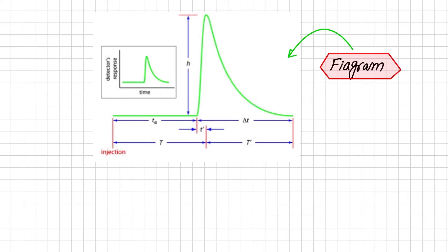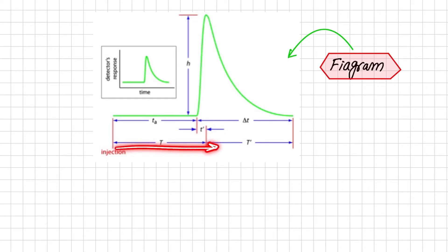There are several parameters for characterizing the sample FIAgram. Two parameters define the time for the sample to move from the injector to the detector. The first is T_A, the travel time — the time between sample injection and the arrival of its leading edge at the detector. The second is the residence time, represented by capital T — the time required to obtain the maximum signal. The difference between travel time and residence time is represented by small t′, which approaches zero when convection is the only means of dispersion, and increases as diffusion becomes important.